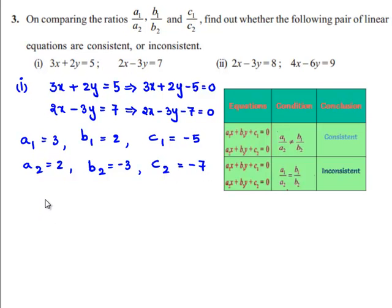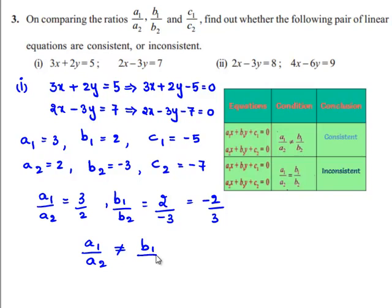So let us find out the values of a1 by a2 which is 3 divided by 2 and b1 by b2 equals 2 divided by minus 3 which is nothing but minus 2 divided by 3. So a1 by a2 is not equal to b1 by b2.